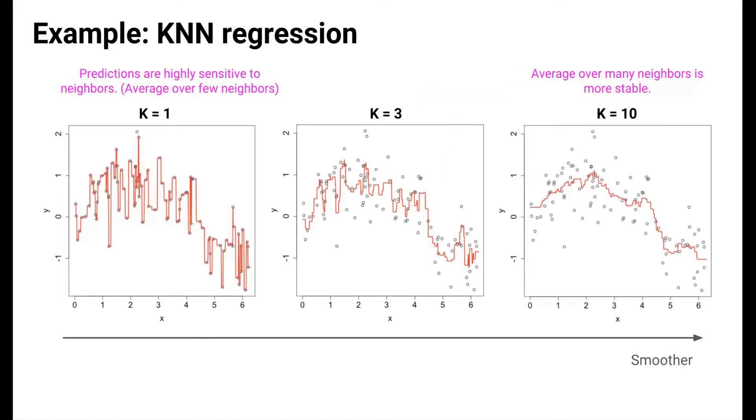We can do the same for k equals 1 and k equals 10. Note that as k increases, the function we learned gets smoother. Why is this?